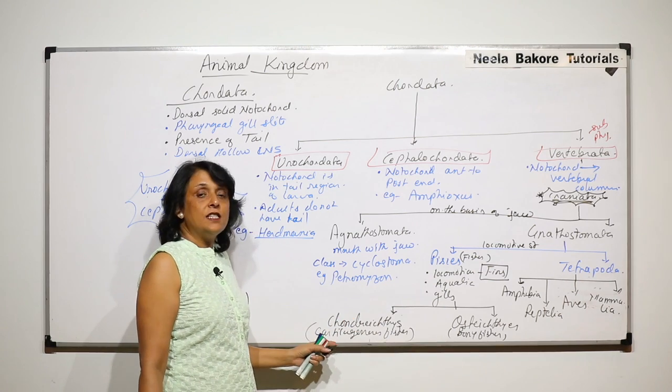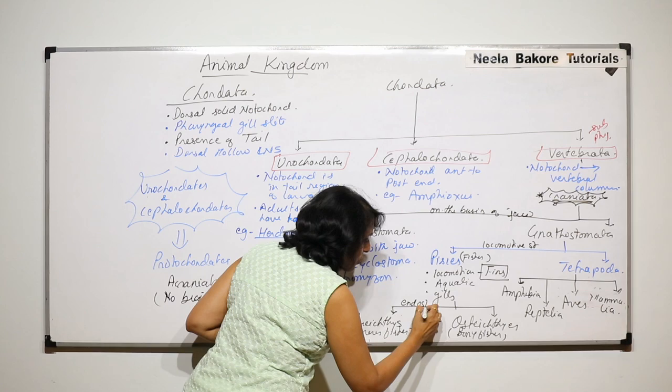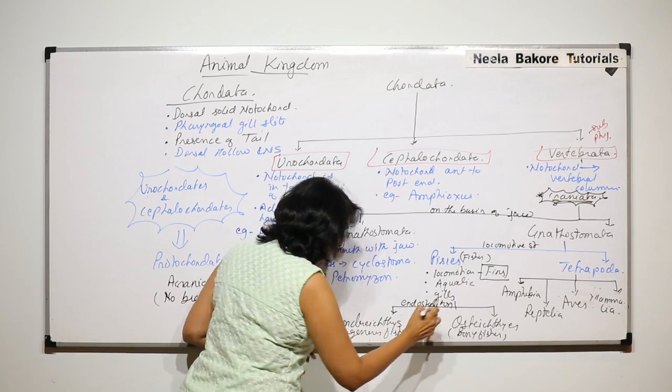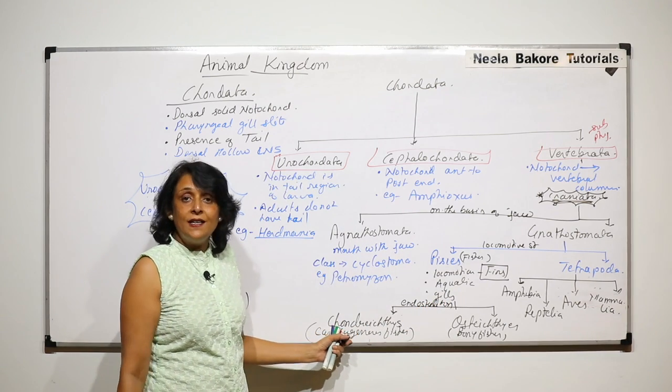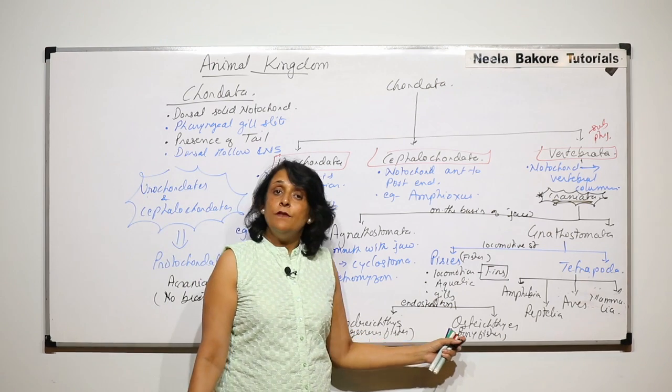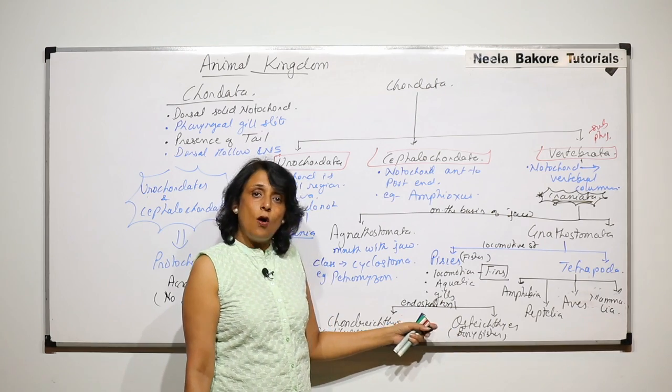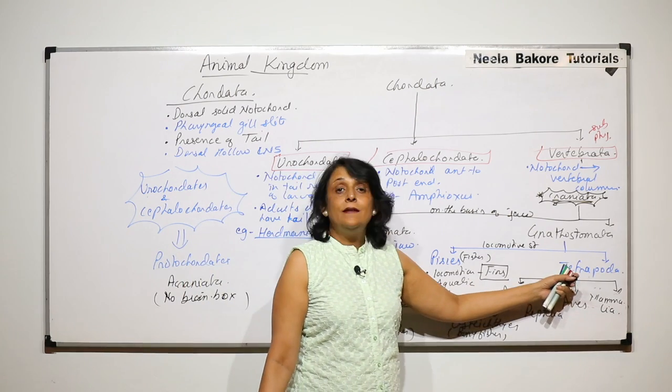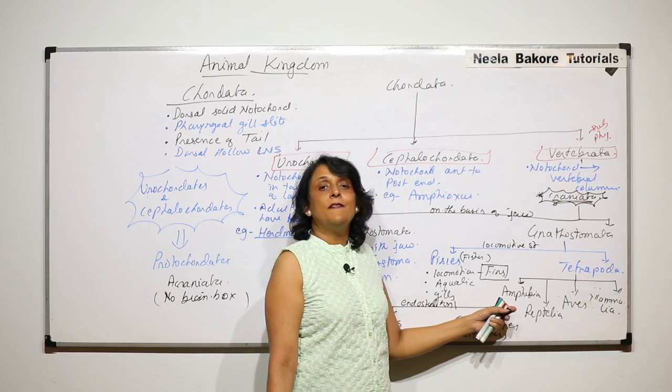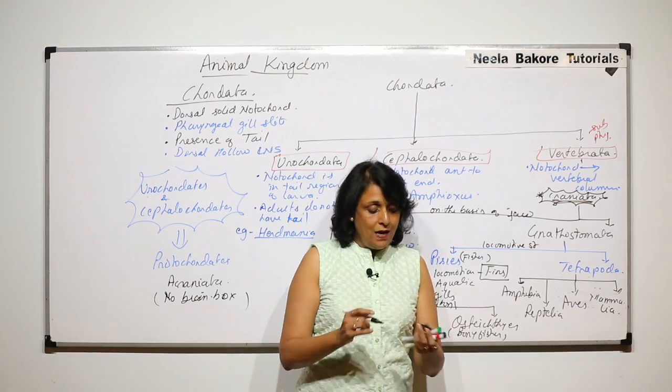Pisces are again classified. This classification is on the basis of endoskeleton. If endoskeleton is of cartilage, they are called cartilaginous fishes or Chondrichthyes. If the endoskeleton is of bones, they are called bony fishes or Osteichthyes. Tetrapoda is further divided into Amphibia, Reptilia, birds, and mammals.